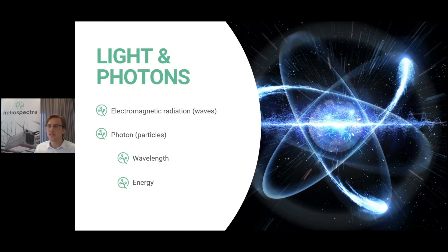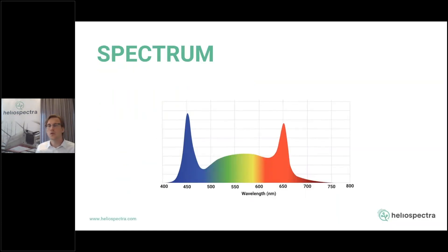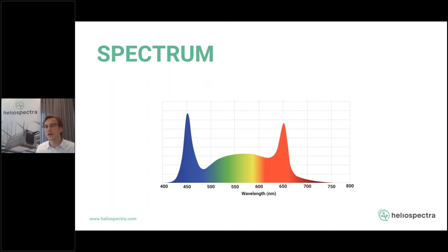Each photon has a certain wavelength, and the wavelength corresponds to which color that photon has and how much energy it carries. I find it easier to think about light as photons when working with plants. A spectrum is a visualization of a certain light source — how much of that light consists of blue photons, how much is green photons, and how much is red photons. You look at a graph where the wavelength of the light is on the x-axis.